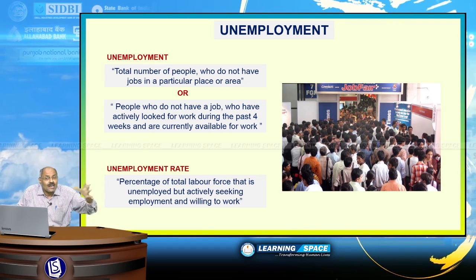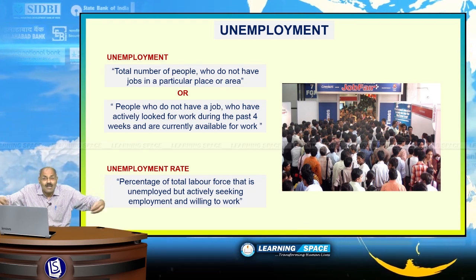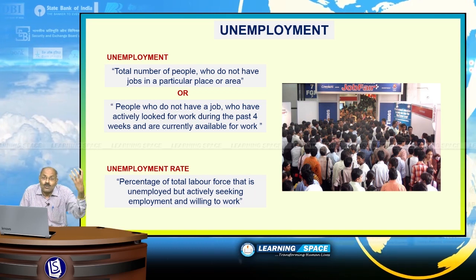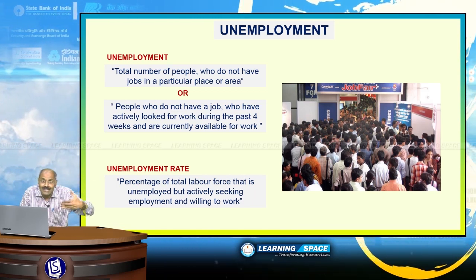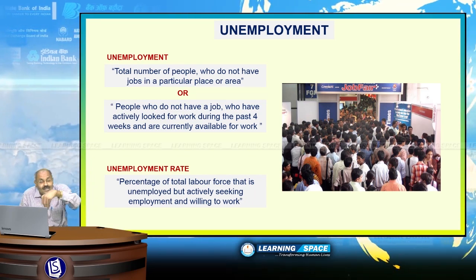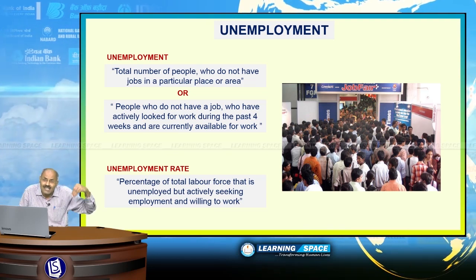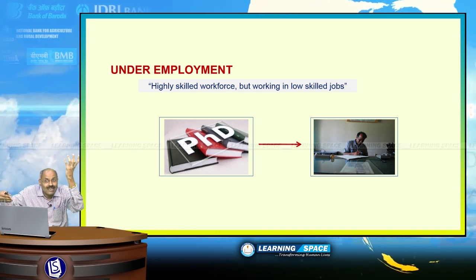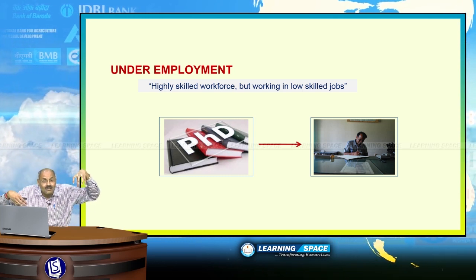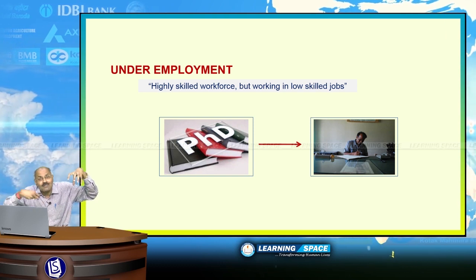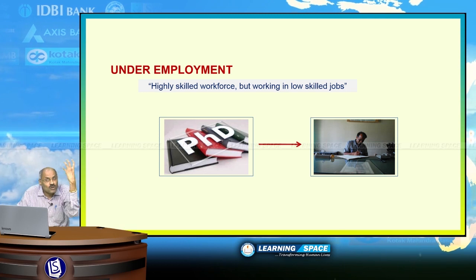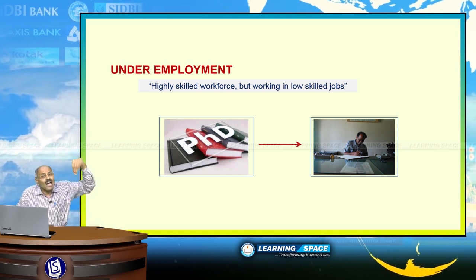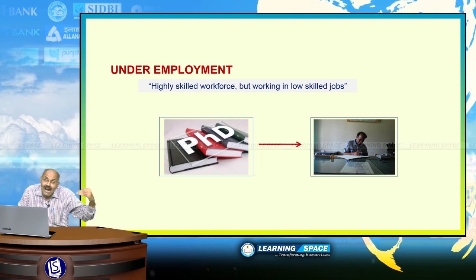In European countries and America, unemployment rate statistics are released regularly, but unfortunately in our country these statistics are not measured properly. Unemployment rate is the total percentage of the labour force that is unemployed. There is also the term underemployment — meaning highly skilled workforce working in low-skilled jobs. For example, a PhD scholar working as a bank clerk, or a postgraduate working as a class 4 employee in a bank — that is underemployment.